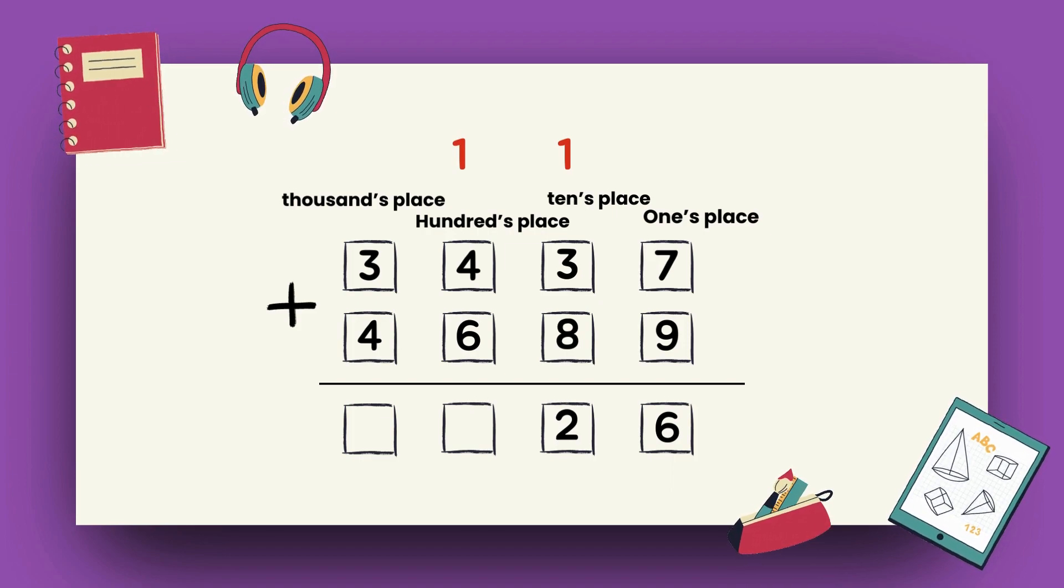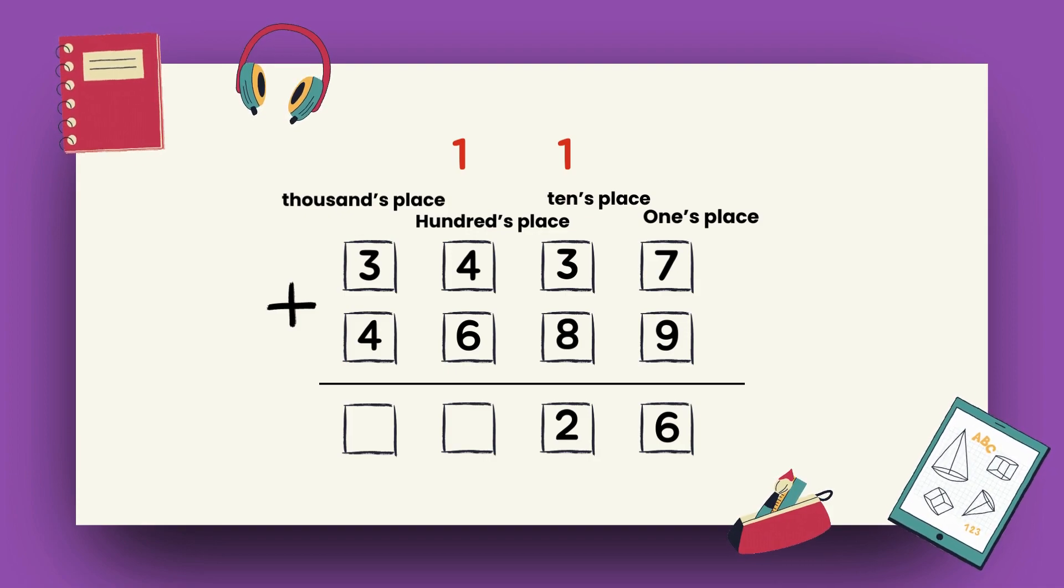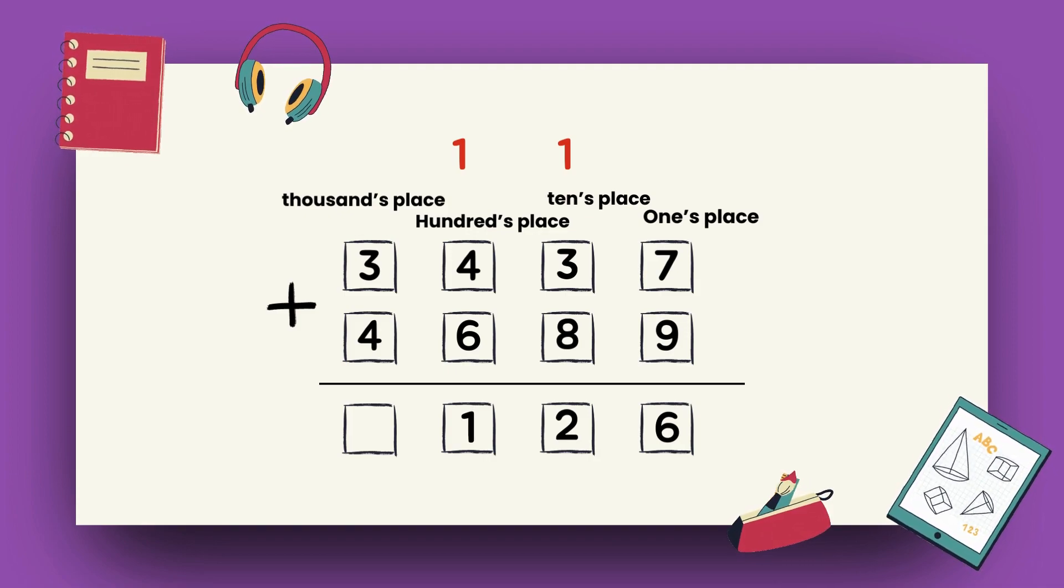Now, moving to 100's place, 4 plus 6 plus 1 becomes 11. 1 comes at 100's place, 1 goes to carry. For thousand's place, 3 plus 4 plus 1 becomes 8.